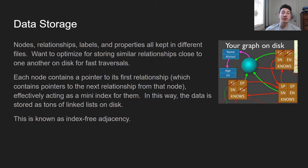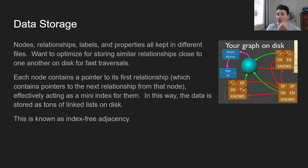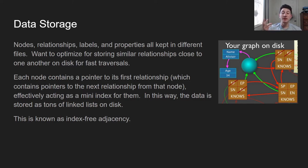Nodes, relationships, labels, and properties are all going to be stored in different sets of files, and all of these files are effectively just going to be linked lists. The linked lists give us the disk address from one node to its corresponding relationships, or one relationship to the next relationship on the same starting node. By doing this, we can quickly run all of these queries — as opposed to a traditional database where you have to hit an index every single time, by using this linked list we're basically just running a disk traversal using disk pointers with relatively adjacent data to get very fast performance. Each node has a pointer to its first relationship, and then the first relationship has a pointer to the second relationship from that starting node, and so on. This is what's known as index-free adjacency, and index-free adjacency is why Neo4j is able to achieve very fast performance.